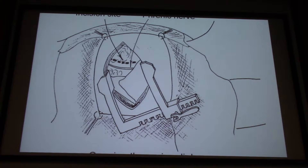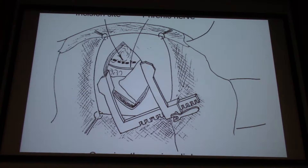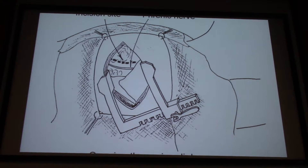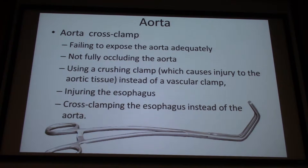Knowing how to put the rib spreaders in correctly matters. I've done my fair share of thoracotomies in the ER and every single time I still put the rib spreaders in backwards. Intuitively you want the crank on top, but you actually want the bar on the bottom so that if you have to clamshell — going across the sternum and opening up the right side — you can do that without the bar in your way.